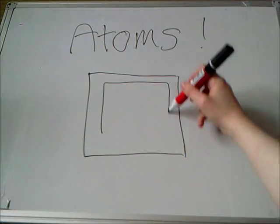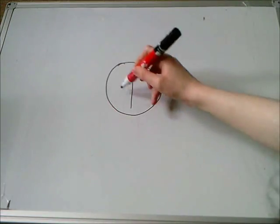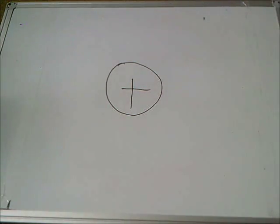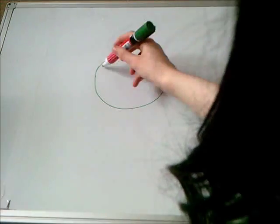But what does an atom look like? An atom has a positively charged nucleus with negatively charged electrons around it, but we're only interested in the nucleus.